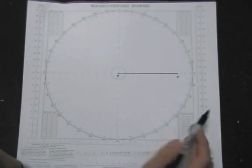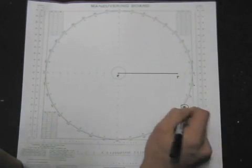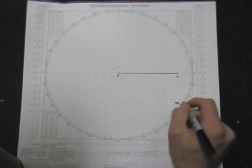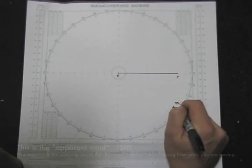So in this case we're counting off 30 degrees off the starboard bow, circling 120. That's the apparent wind. That's the direction that the wind is blowing from, apparently, because you're on a moving ship. That's important.